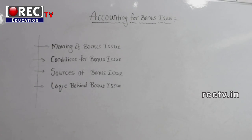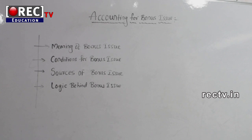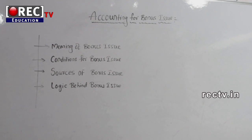Conditions for bonus issue: a company can issue bonus shares if all of the following conditions are satisfied. The first condition is there should be no default in the payment of principal or interest on debentures. That is, first they have to pay the other creditors, and after that, whatever reserves remain, from that they will pay the bonus issue.